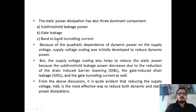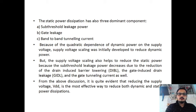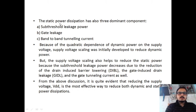The third is band-to-band tunneling current. In a MOS transistor, there are parasitic diodes between the diffusion and substrate. When current passes through this diode, electrons tunnel from the valence band of P-type to the conduction band of N-type — that is called band-to-band tunneling current. These are the main dominant components in static power dissipation.